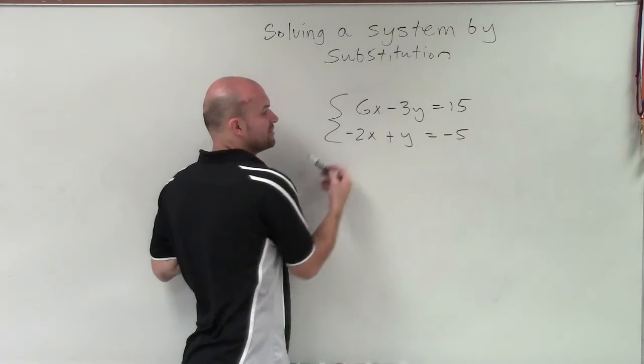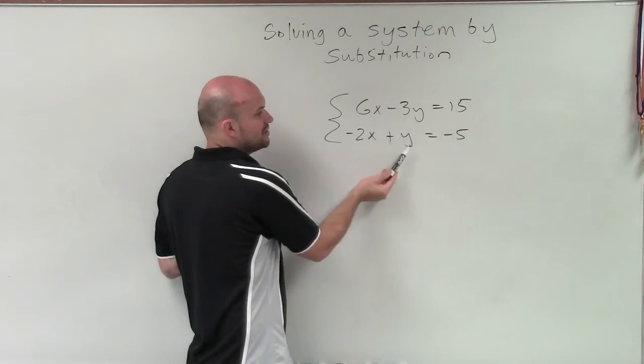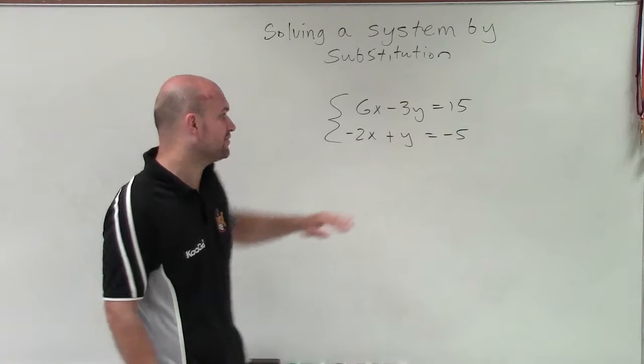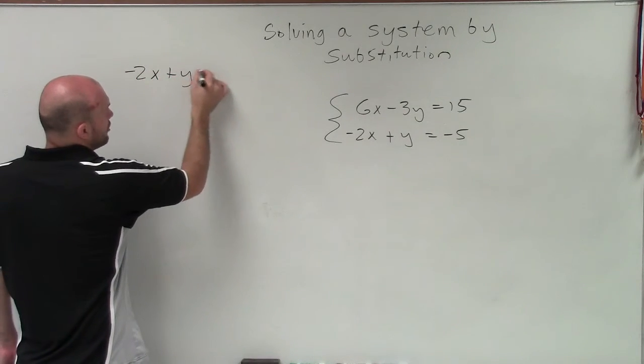So my first equation, neither of my variables have a coefficient of 1 or negative 1. But in my second equation, I notice that the y in this equation has a coefficient of 1. So therefore, that's the equation I'm going to use to isolate the variable y.